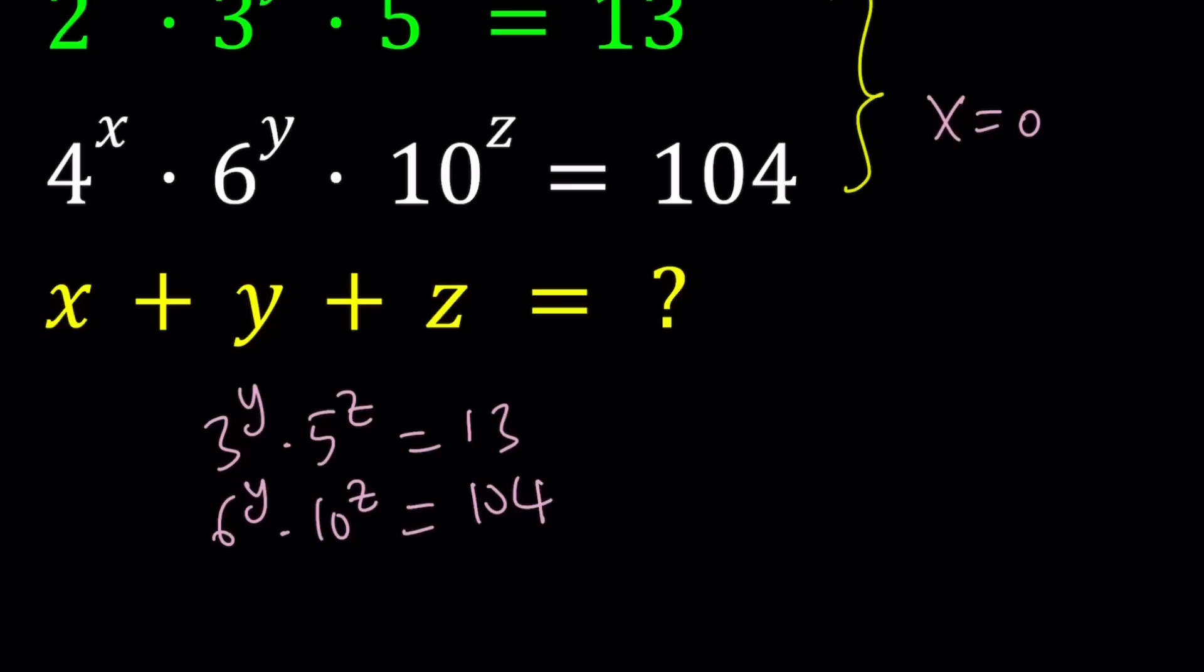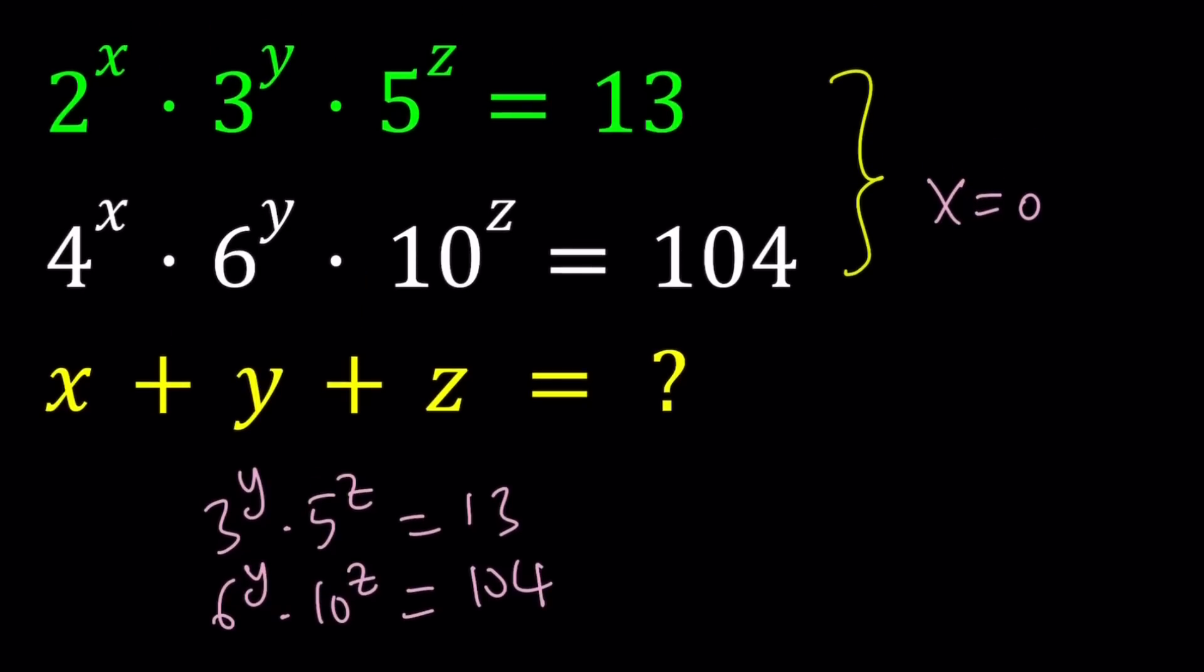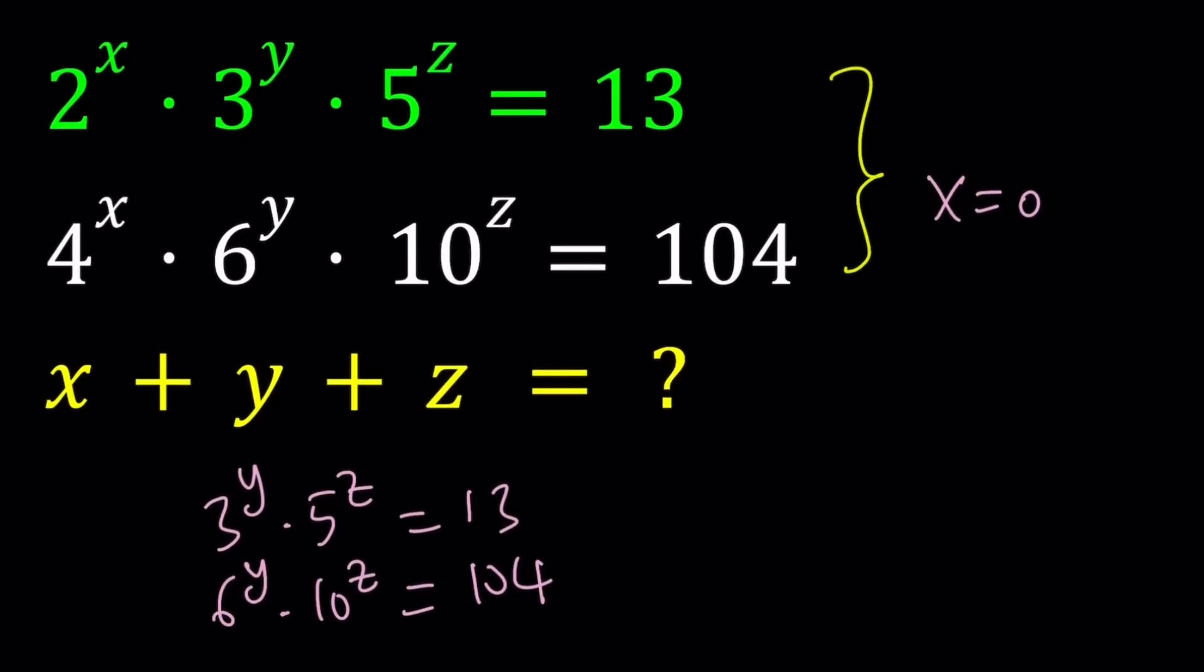But there's definitely a much better way because they're asking for x plus y plus z, not for individual values. If they were, then we would have to solve them. Like I said earlier, we can't find a finite number of solutions for x, y, z because there's infinitely many. Make sense?